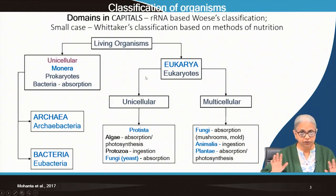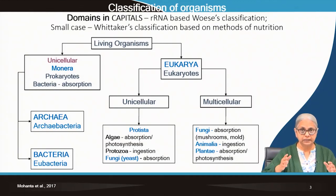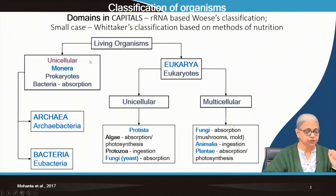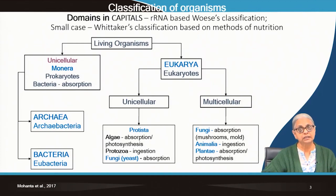Just to make sure we are clear about the two ways of classifying all living organisms — it is very important so that there is no conflict or contradiction. All prokaryotes are unicellular and they are all bacteria. Within bacteria, we now have two domains based on Woese's classification: archaeobacteria and bacteria, or eubacteria — these are the terms we used prior to Woese's classification.